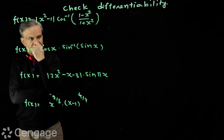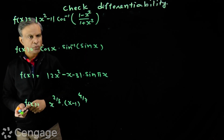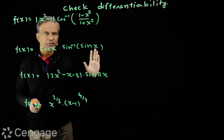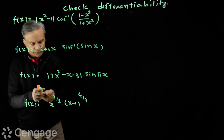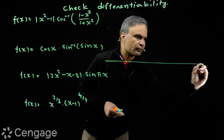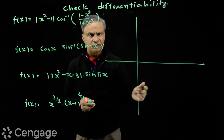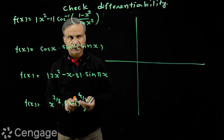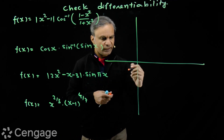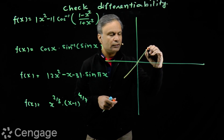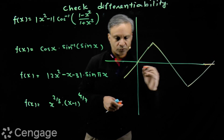The second function is f(x) = cos(x) · sin⁻¹(sin x). cos(x) is continuous and differentiable everywhere. We need to know the graph of sin⁻¹(sin x). Let's draw it — this graph is important and appears in many places: differentiability, monotonicity, definite integration, and area under the curve. The graph consists of repeating triangles and is a periodic function with period 2π.